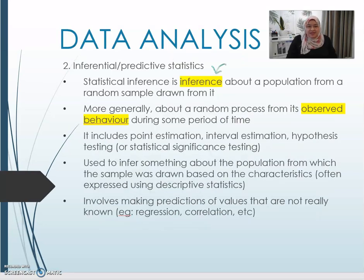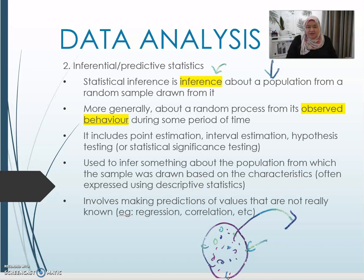For the second type of statistic, it's inference about a population from a sample, a random sample drawn from it. What is sample and what is population? This is your population - you have various types of individuals with different characteristics. What is sample? Sample is where you take out a few samples of individuals to represent the whole population.